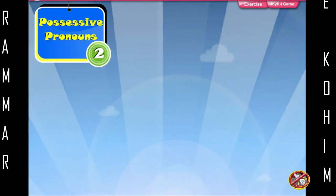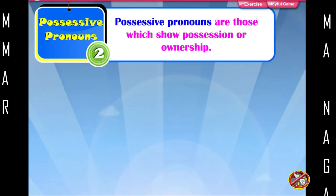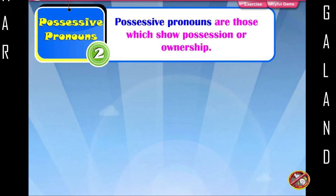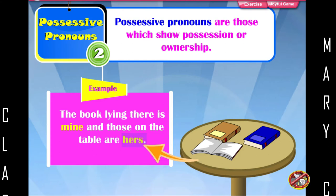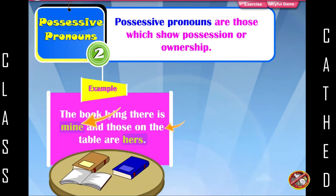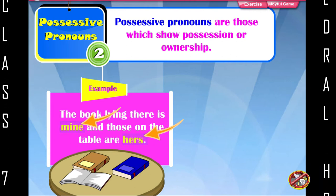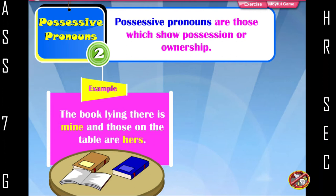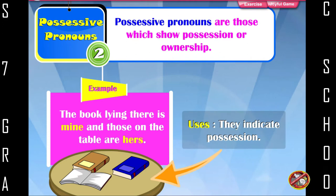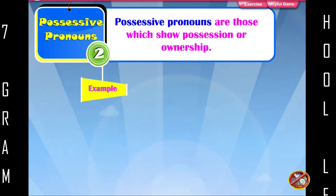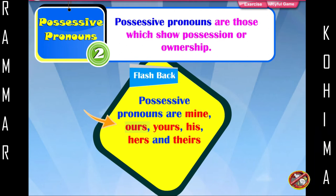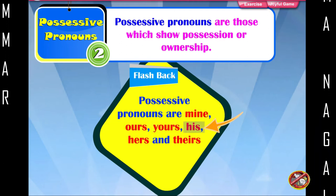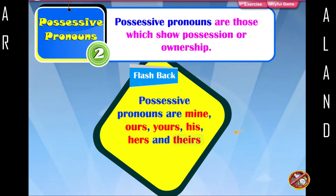Possessive pronouns are those which show possession or ownership. Example: The book lying here is mine, and those on the table are hers. Here, mine and hers indicate possession, hence they are possessive pronouns. Possessive pronouns are: mine, ours, yours, his, hers, and theirs.